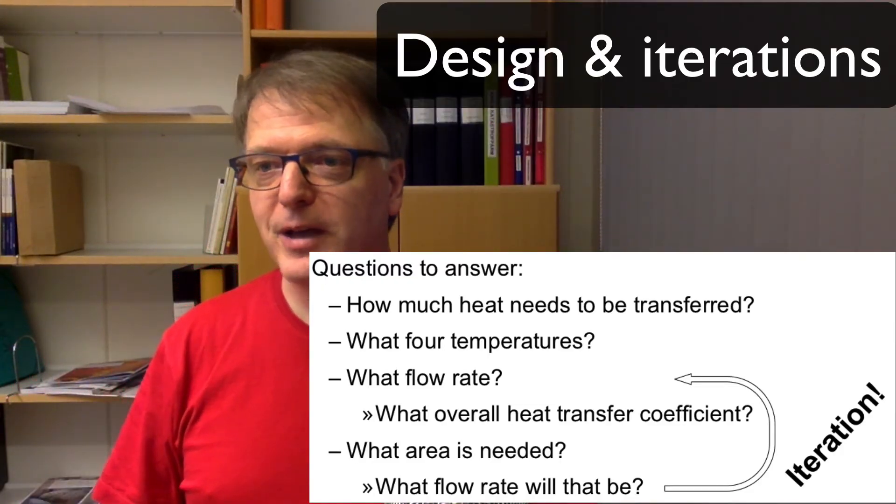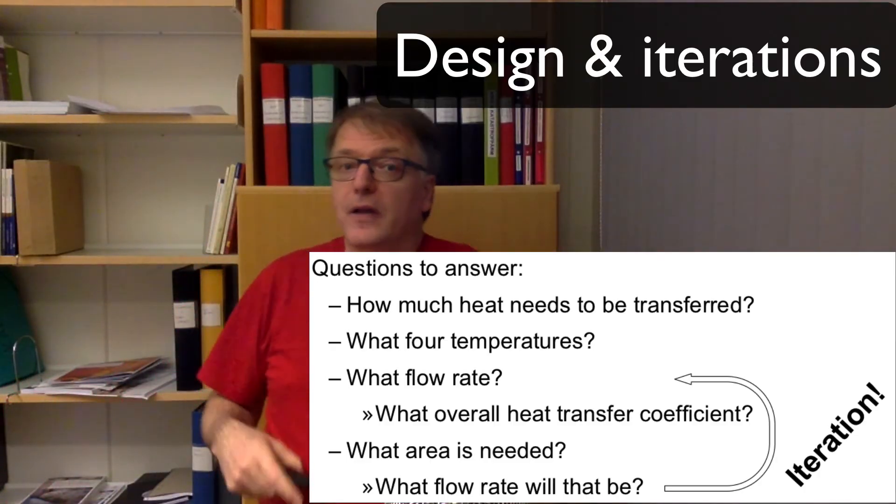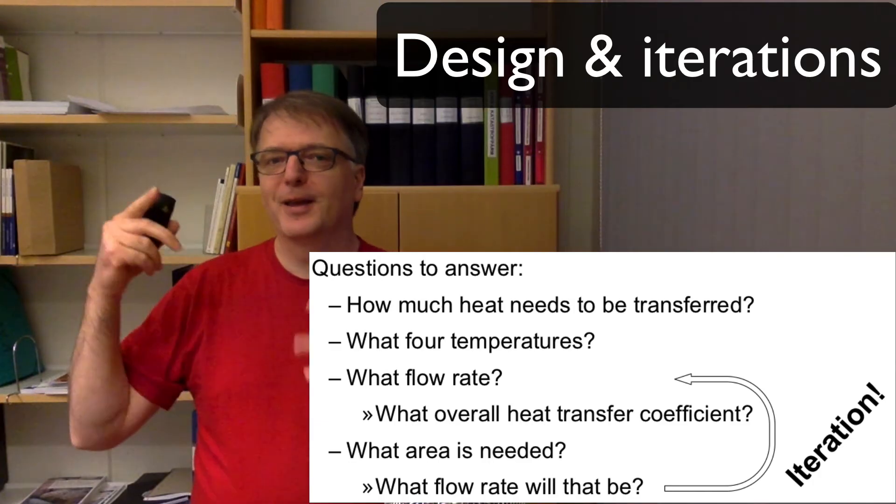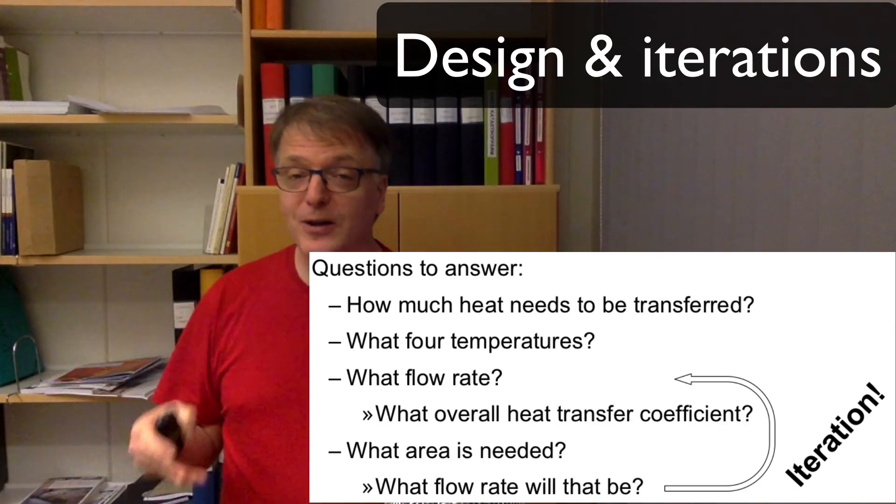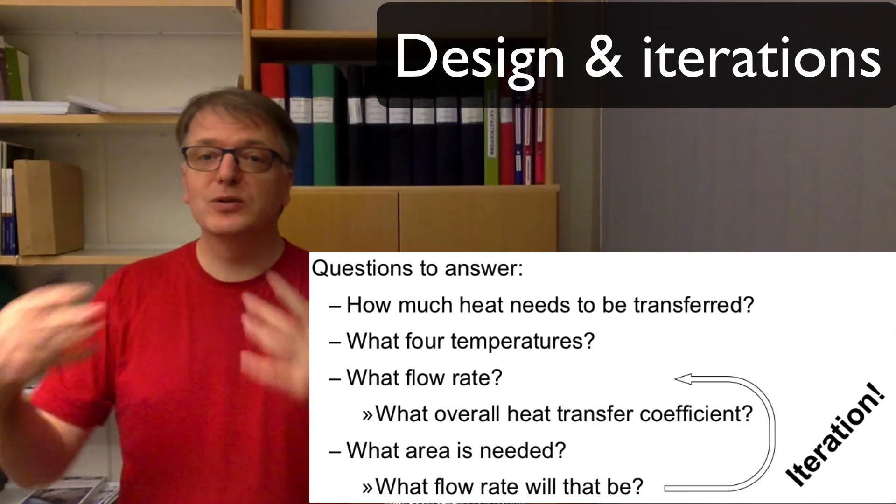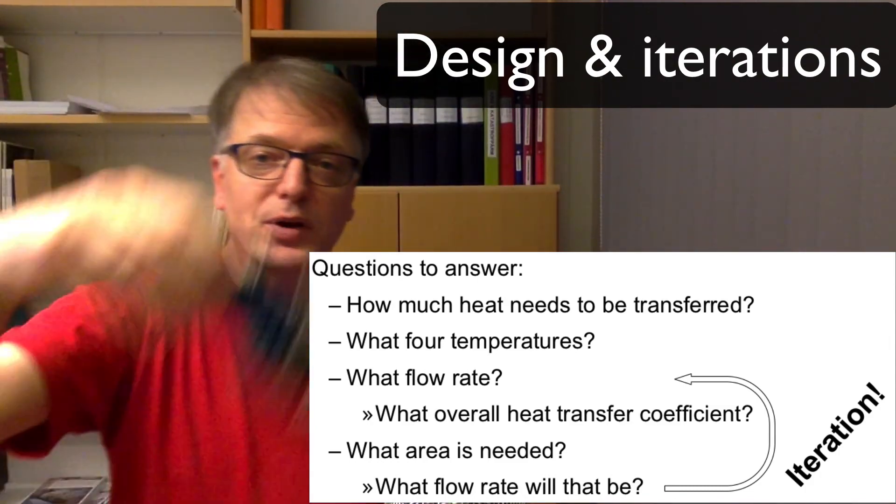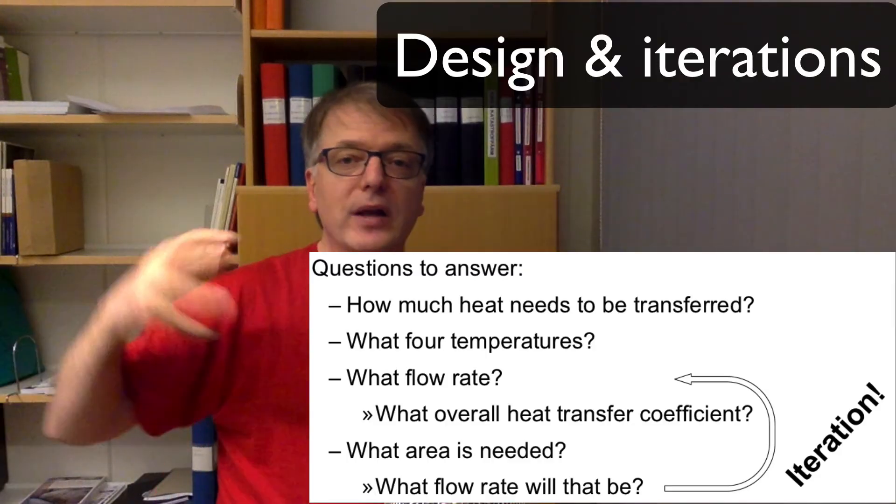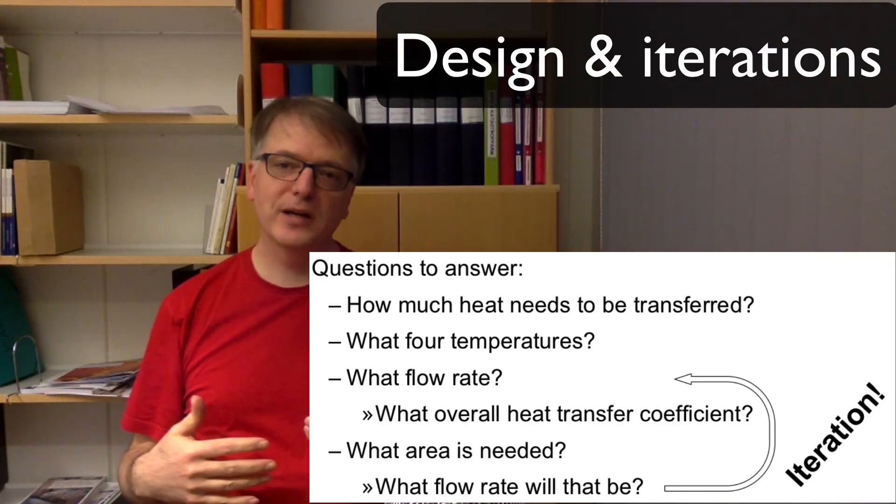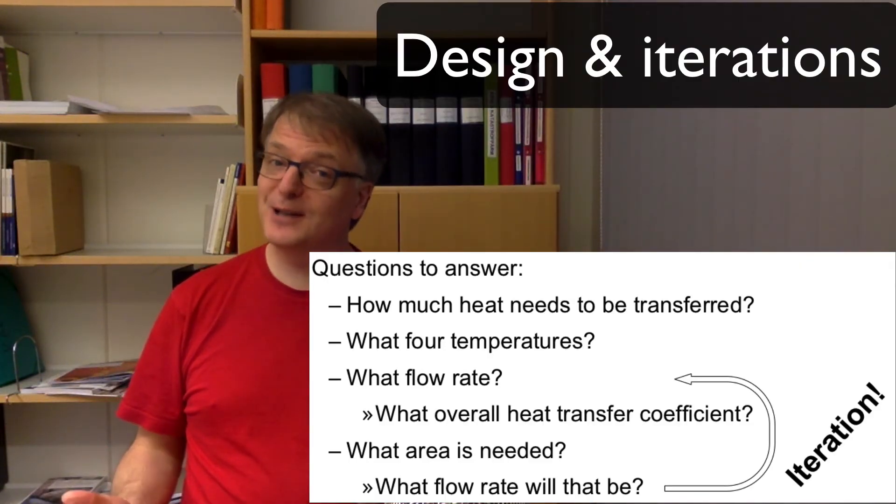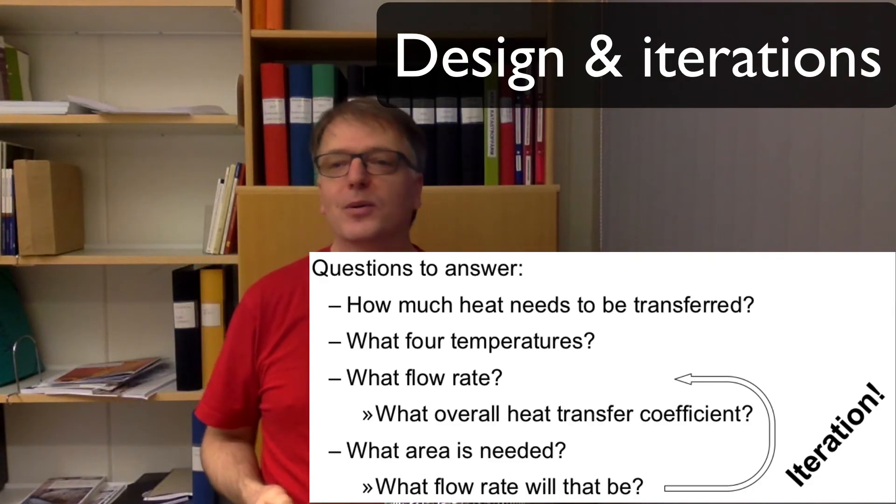Which in turn will influence the flow rate. Now the problem is you have to do an iteration here. You have to guess a flow rate or just set a flow rate you would like to have, and then you do the calculations and then you do this design, whatever you do—a plate heat exchanger or whatever. When you've done all the design choices you can calculate the flow rate, and if that flow rate is different than the one you used before, then you need to redo your calculations and continue until it all fits.